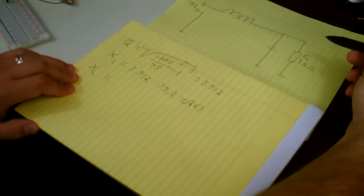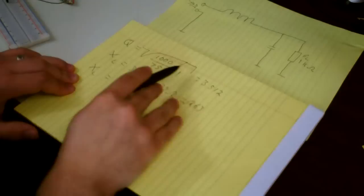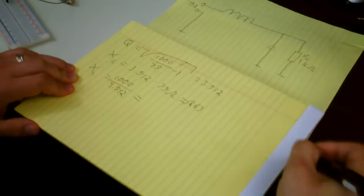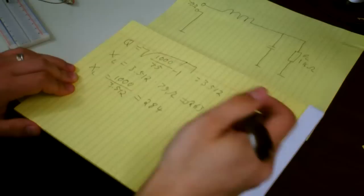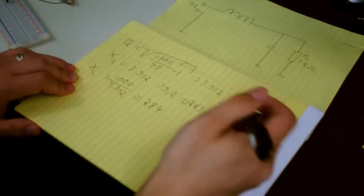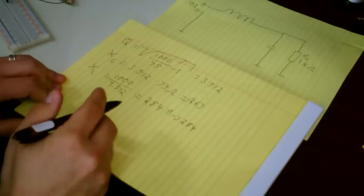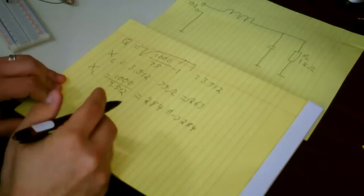As far as XC is concerned, we take our load impedance and divide it by Q. So 1000 divided by 3.512 equals 284 (rounded). To mark that it is a capacitive impedance, we write negative j284.